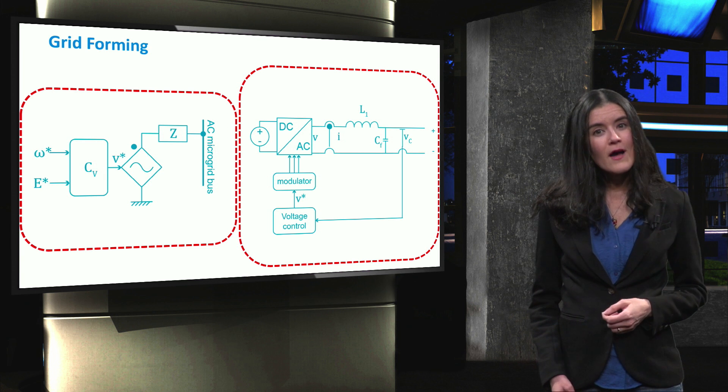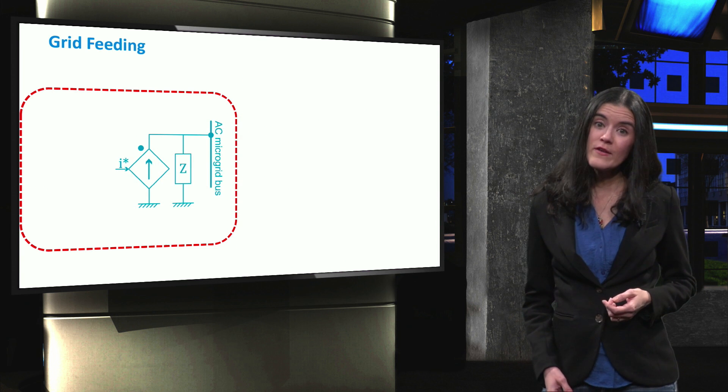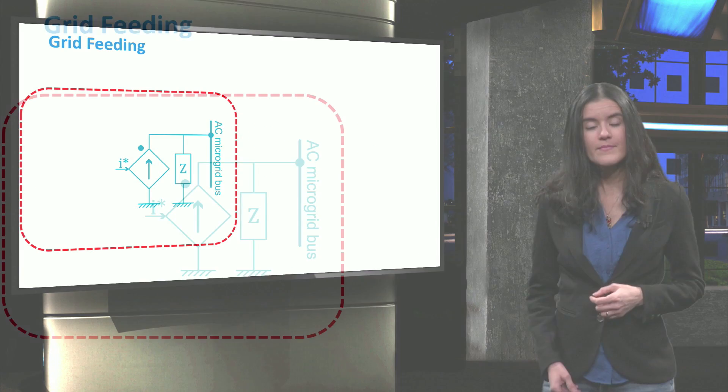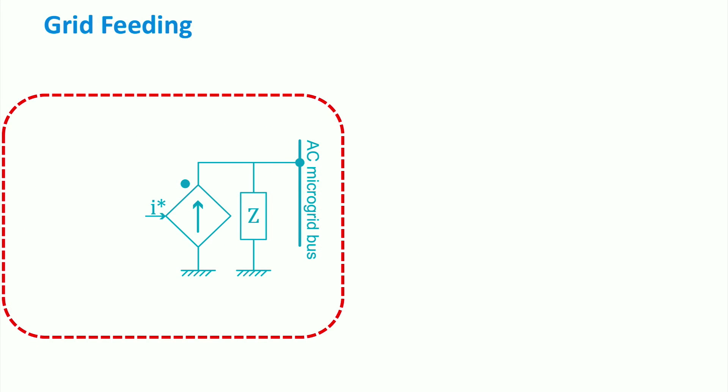So let's now have a look at the second type, the grid-feeding power converter. These converters can be represented by a grid-connected ideal current source with a high impedance in parallel. Grid-feeding converters adjust the set points of the active and reactive power according to the input power source.